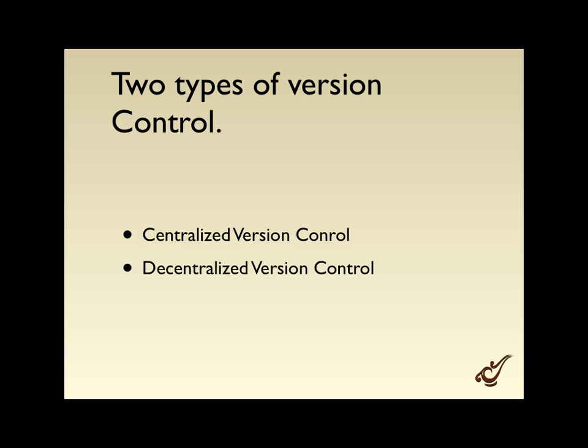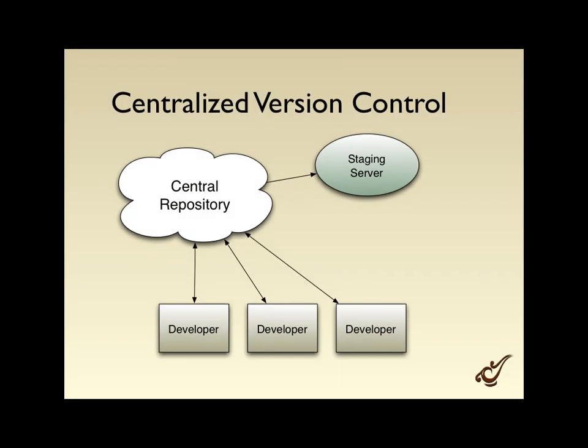There are two types of version control systems: centralized and decentralized. CVS and SVN are what's called centralized version control. You basically have a version control system out on the cloud — it could be your own server on the internet, or through a hosted service like Unfuddle or Spring Loops. It's a repository that your developers connect to. When developers come in on a project, they pull the latest code from the central repository over the internet, make changes, and commit those back with all the version data.